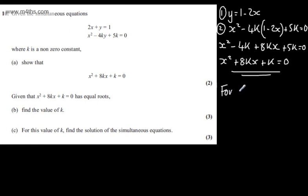I can write now for equal roots the discriminant b squared minus 4ac will be equal to 0. So for equal roots b squared minus 4ac will be equal to 0. So let's go ahead and find our values of a, b and c.